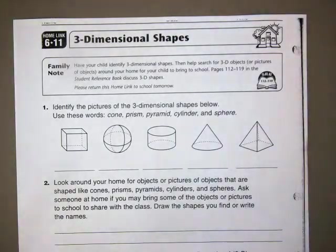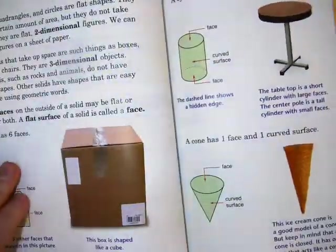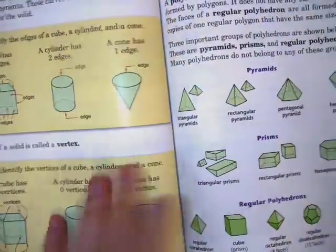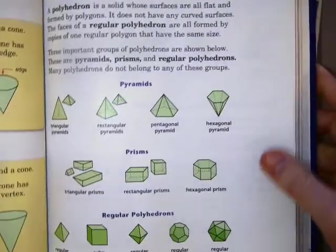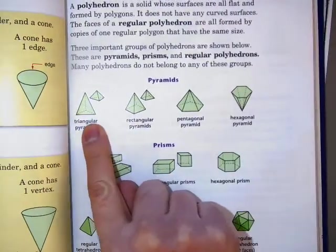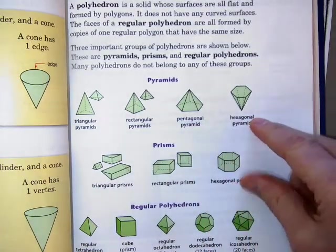I'm just going to show you a little bit in the reference book here, some of the 3-Dimensional shapes that we're working with. The 3-Dimensional shapes I want to share are Pyramids: Triangular Pyramid, Rectangular Pyramid, Pentagonal Pyramid, and Hexagonal Pyramid.